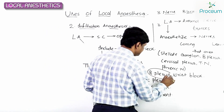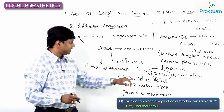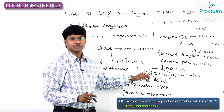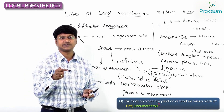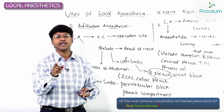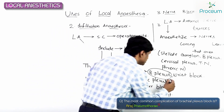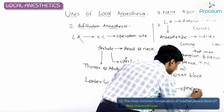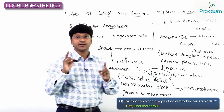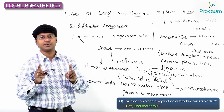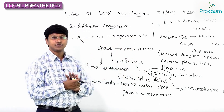A multiple choice question: what is the most common complication of the brachial plexus block? Remember, when you inject the local anesthetic drug around the brachial plexus, there is a great chance you can puncture the pleura, resulting in pneumothorax. So pneumothorax is the most common complication of the brachial plexus block.